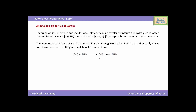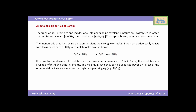Here, NH3 acts as the Lewis base and BF3 acts as the Lewis acid. This is due to the absence of d-orbitals in boron, so the maximum covalency of boron is four. Since d-orbitals are available with aluminium and other elements, the maximum covalence can be expected to go beyond four.